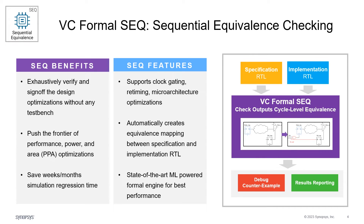VC Formal Seq utilizes a state-of-the-art machine learning-powered formal engine for best performance, which can save weeks or months of simulation regression time. It also allows more PPA — performance, power, and area — optimization through sequential transformations.